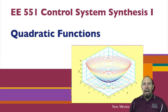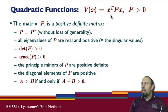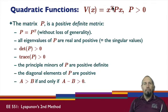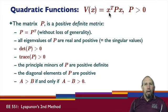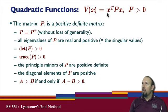An important class of positive definite functions is the quadratic function. A quadratic function is of this form: V of x is equal to x transpose Px. We have seen this before — we saw that we could define a norm this way by taking the square root of this quantity. We also saw that this form could be used as an inner product, so we already have a bit of mileage associated with this quadratic form.